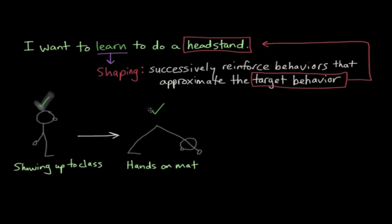But again, eventually this isn't going to be enough because the goal here is to perform a headstand. So next you're going to reinforce a behavior that approximates or comes even closer to a headstand. And let's say, in this case, you're going to reinforce placing your forearms on the mat. So now that you're in this position where your feet are on the mat and your elbows are down and your forearms are on the mat, that's pretty close to performing a headstand. At least it's closer than just showing up to class.